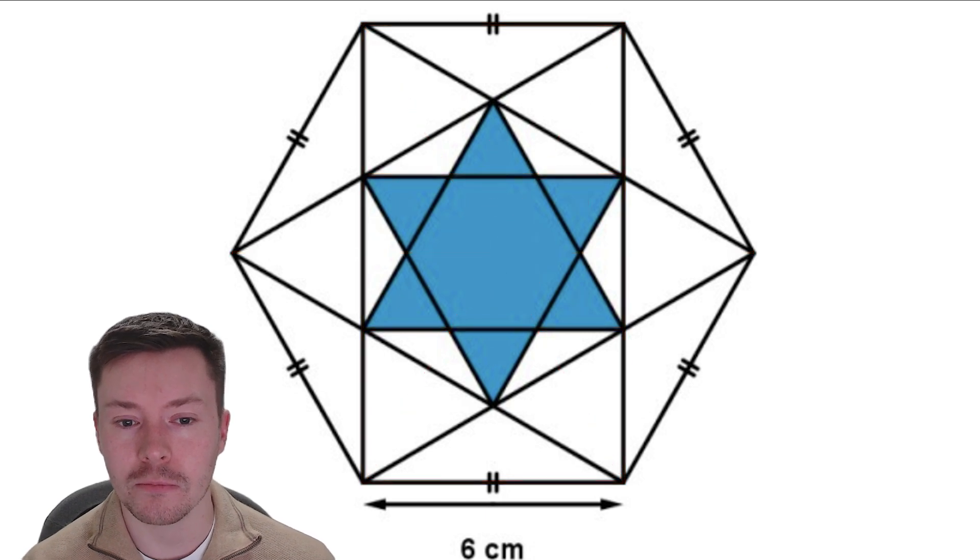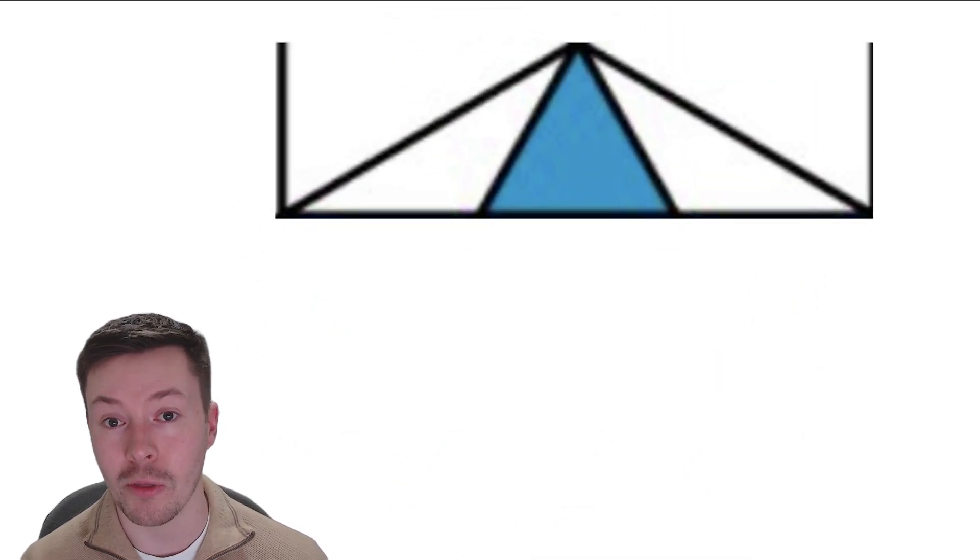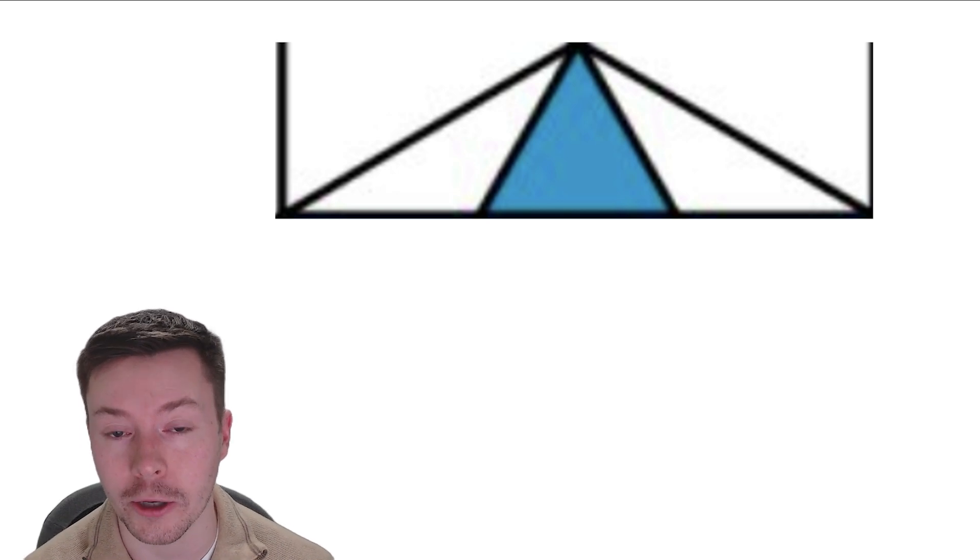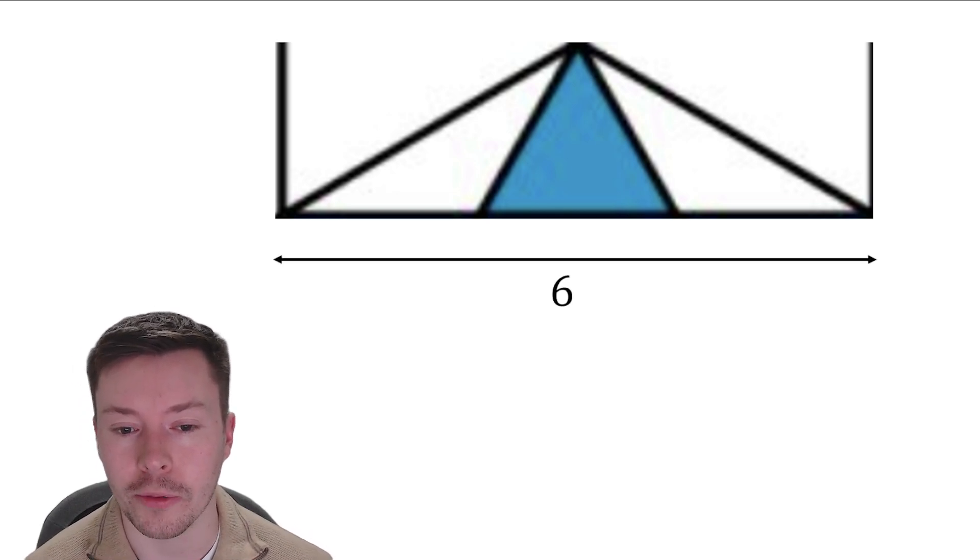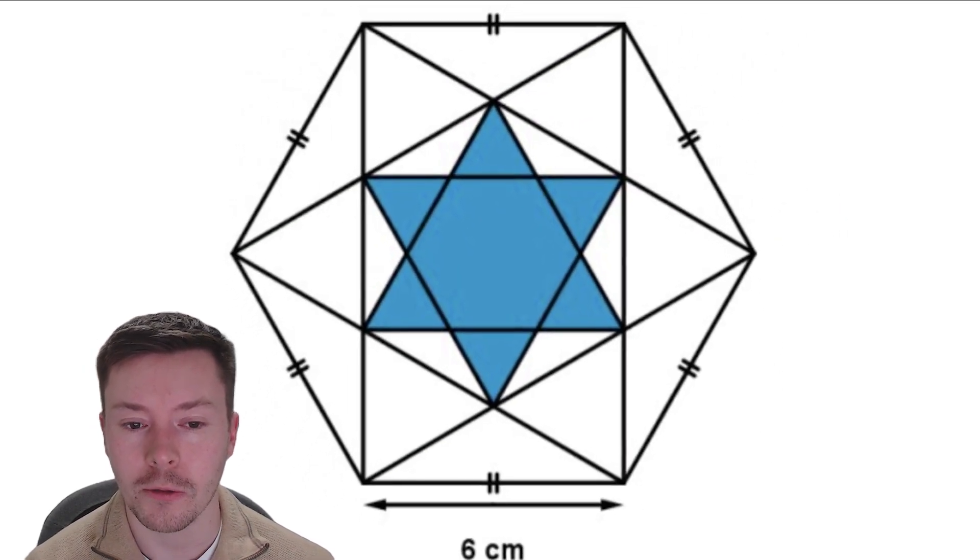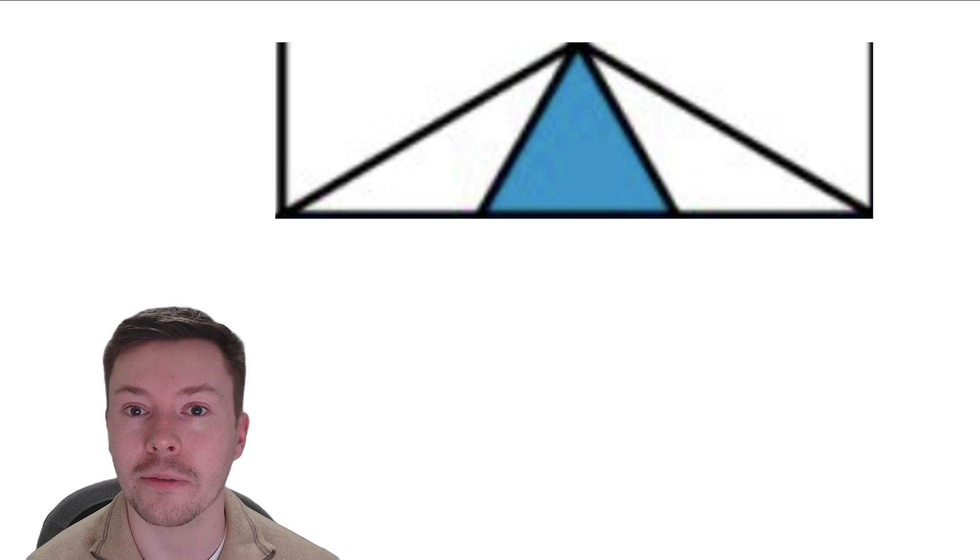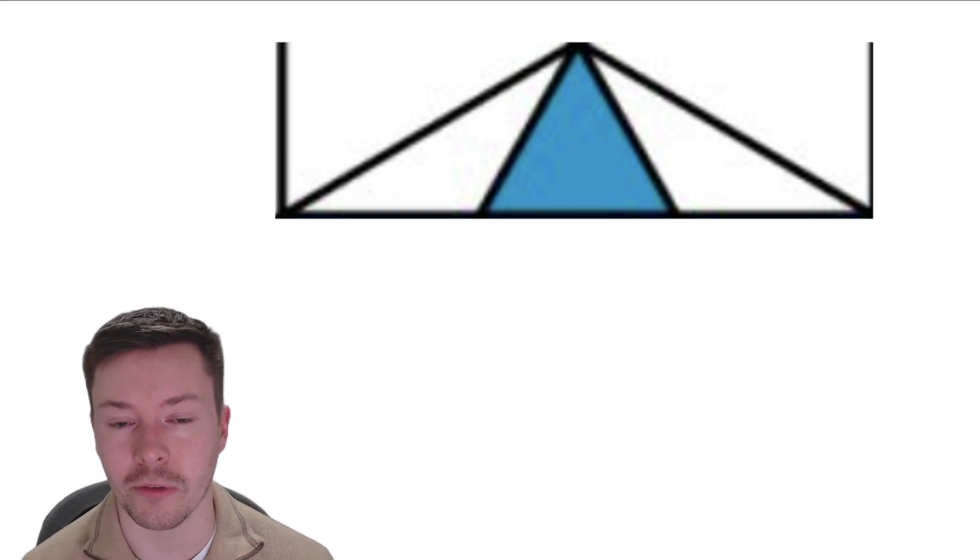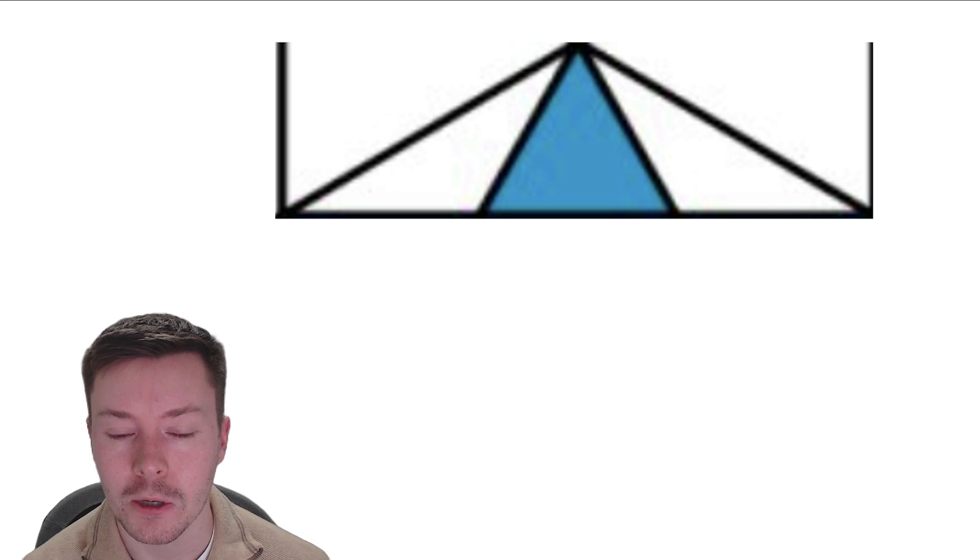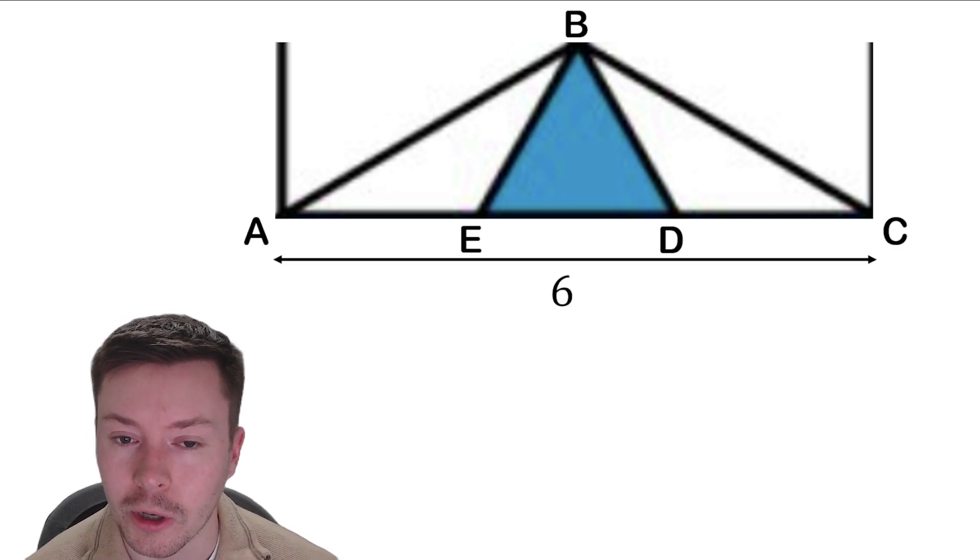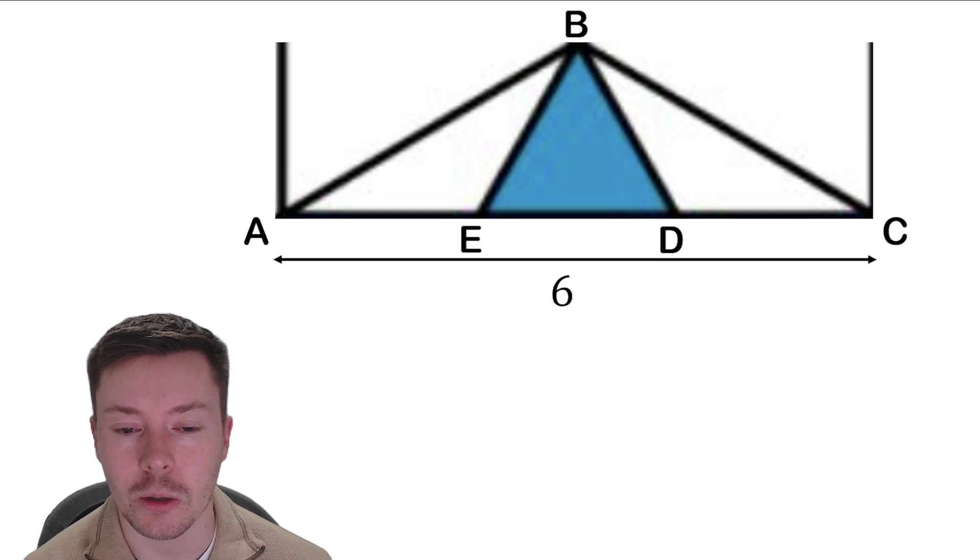So now let's zoom into this problem. Let's isolate what we're trying to work out and that is just one of these blue triangles. Now we know that's got a width of 6. If you don't believe me, we can go back. That is the same width as the side of the hexagon because it's parallel to the base. So I'm going to label that A, B, C, D and E just to make things a bit easier in terms of explanation.